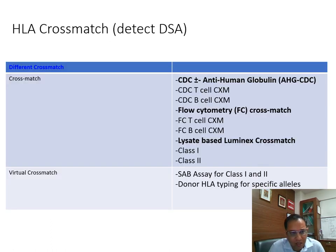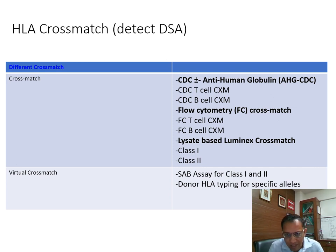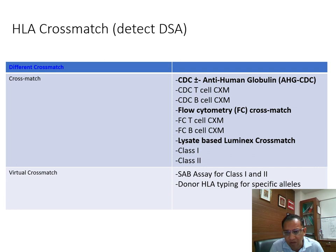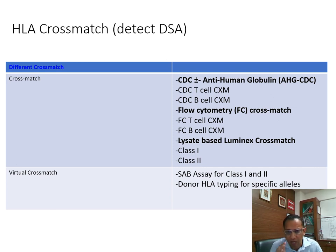Different crossmatch methods are available. The CDC crossmatch is a very crude, raw test — it is very specific but not highly sensitive. To increase sensitivity, we add anti-human globulin (AHG), making it the AHG-augmented CDC crossmatch, which is far more sensitive than the crude CDC but still not as sensitive as flow cytometry or lysate-based Luminex crossmatch. Most centers in the country would not proceed with transplant without CDC being negative, so you do the CDC as an AHG-augmented crossmatch.